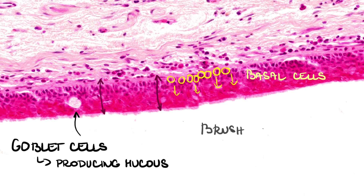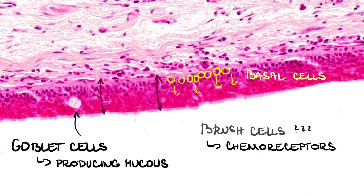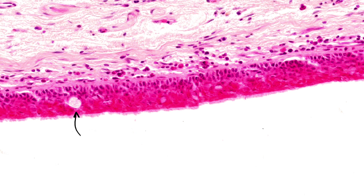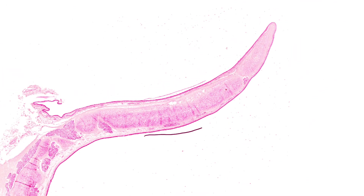There are also brush cells that work as chemoreceptors. We cannot differentiate them without proper immunostaining, but they are somewhere in the epithelium. This pseudostratified columnar epithelium transforms gradually into stratified squamous epithelium on the lingual part that we talked about.